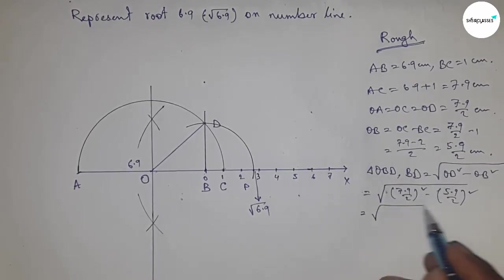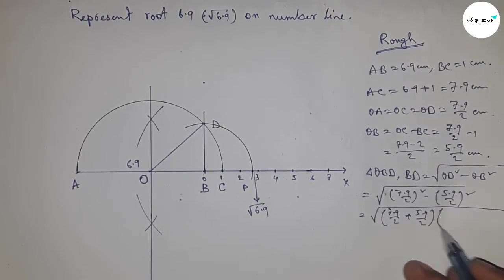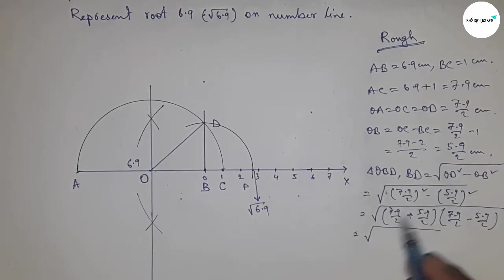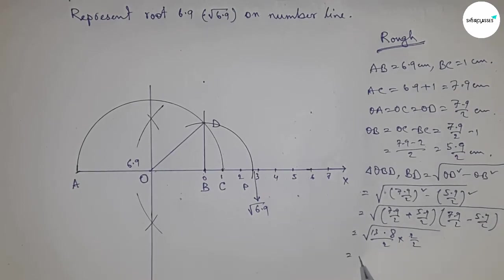I'm going to use the formula a square minus b square equals a plus b times a minus b. Applying this formula, we get 13.8 by 2 into 2 by 2, which equals 6.9 centimeters.